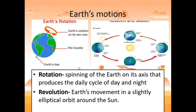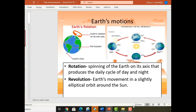Rotation accounts for the 24 hours that we have in a day. We also have revolution, which is defined as earth's movement in a slightly elliptical orbit around the sun. It takes one year to complete. Take note also that earth is tilted at 23.5 degrees, and that tilt actually affects the heating of earth's surface.